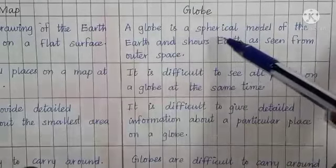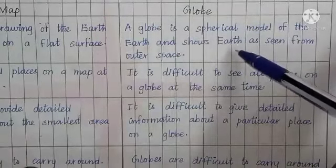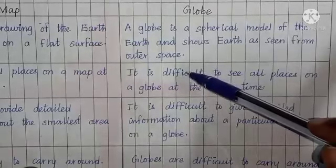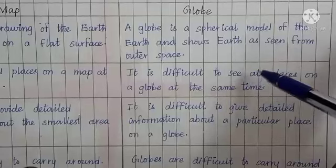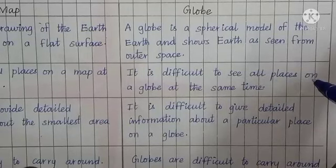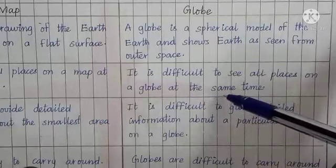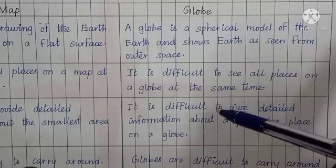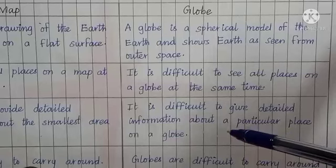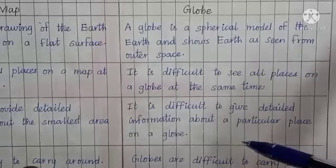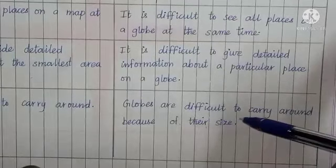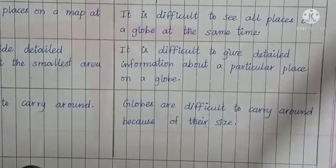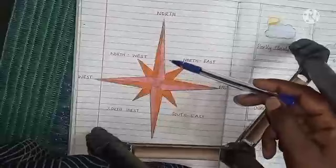Globe: A globe is a spherical model of the earth and shows the earth as seen from outer space. It is difficult to see all places on a globe at the same time. It is difficult to give detailed information about a particular place on a globe. Globes are difficult to carry around because of their size.